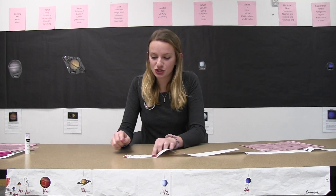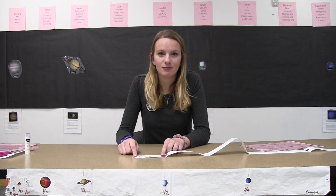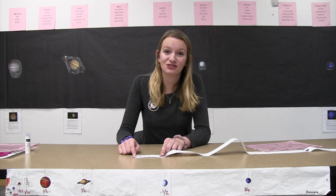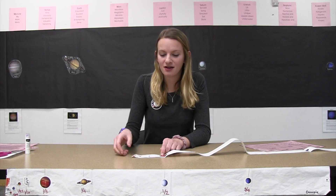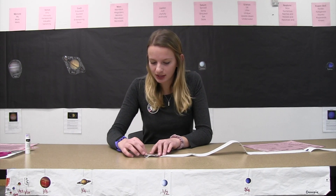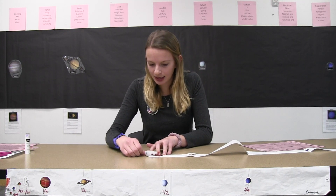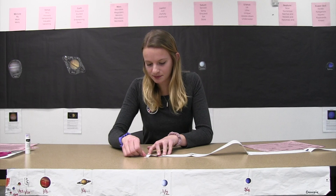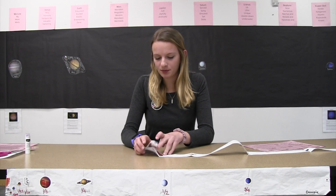Now we've placed the four gas giants that we talked about at the beginning of this video. Between Jupiter and the sun, we have four more planets and an asteroid belt to fit. So fold the sun up to Jupiter, create a crease, and at this mark we will be placing our closest asteroid belt.